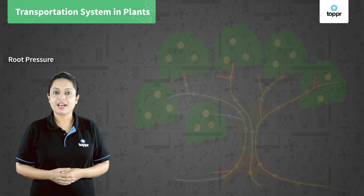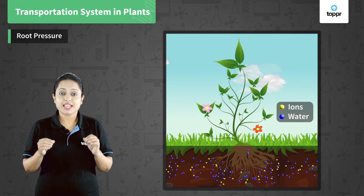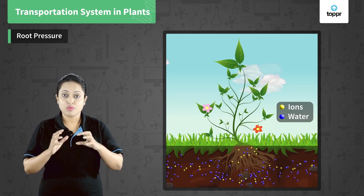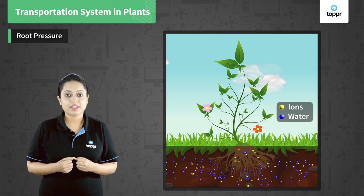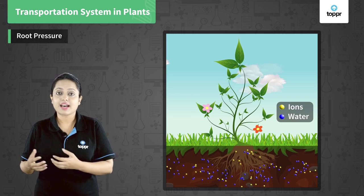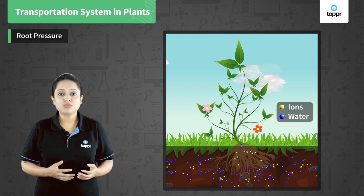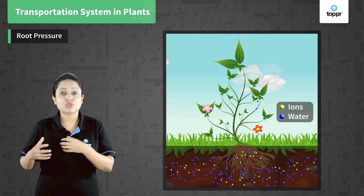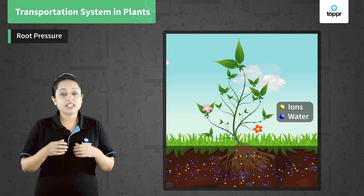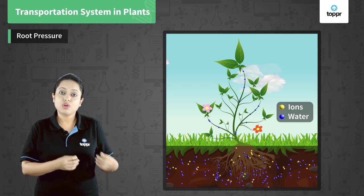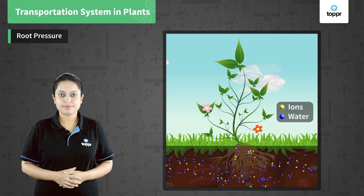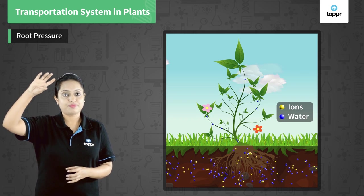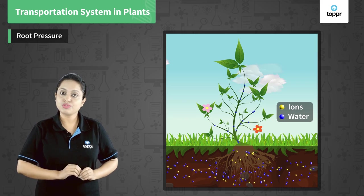Let's first see how water moves up by root pressure. The root cells in contact with the soil take up ions. As a result, root cells have more ions and less water, while soil particles have more water and less ions. So water moves from the area of high concentration to the area of low concentration — that is, water moves from soil particles to the root cells. This movement of water from high concentration to low concentration is known as osmosis.